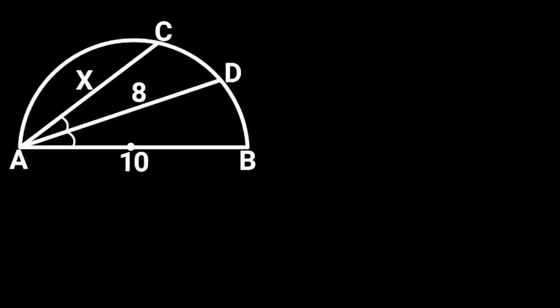This figure is a semicircle with diameter AB. AB is 10 units, and in the semicircle are two line segments, AC and AD. AC is X units and AD is equal to 8 units. If angle CAD is equal to angle DAB, find the value of X.